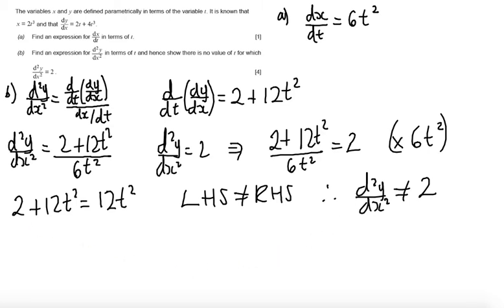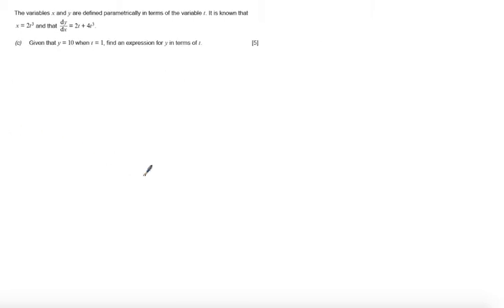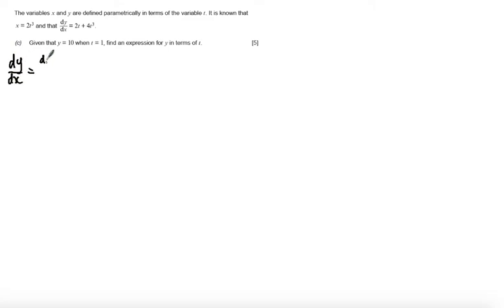Now let's look at Part C. The variables x and y are still defined parametrically in terms of t, with x equal to 2t cubed and dy/dx equal to 2t plus 4t cubed. Part C asks: given that y equals 10 when t equals 1, find an expression for y in terms of t. We'll use the fact that dy/dx equals (dy/dt) divided by (dx/dt).